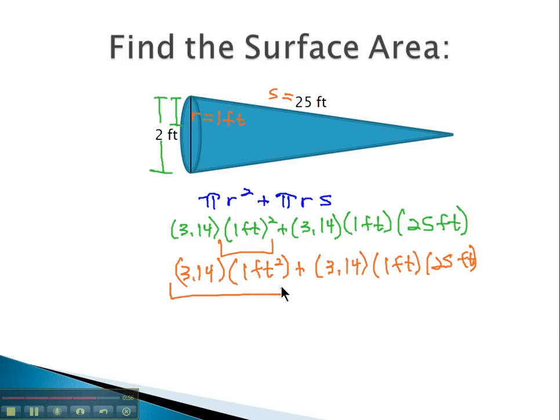Let's use our calculator to help us with the multiplication step. 3.14 times 1 is 3.14 square feet, plus 3.14 times the 25 feet is 78.5 square feet.